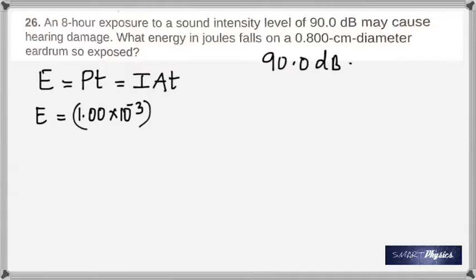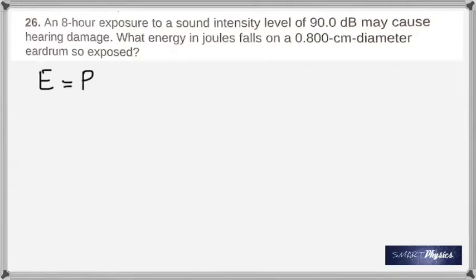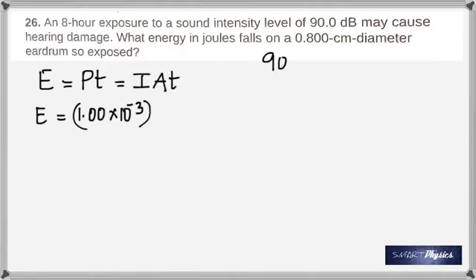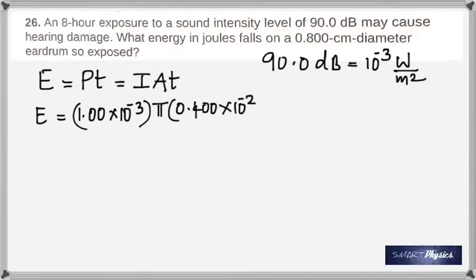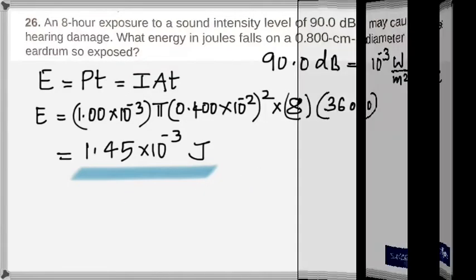And where did I get that from? We've seen that 90 decibels is 10 to the negative 3 watt per meter squared, just in the last problem. 90 decibels there was 10 to the negative 3, right? So that's what I've used here. I didn't want to do that again. So 90 decibels is 10 to the negative 3. And the area is that of a circle which is pi r squared, because the surface on which it falls on the eardrum is circular. So that's pi times radius squared times 8 times 3600, because it's 8 hours. You've got to change it into seconds. And you get 1.45 times 10 to the negative 3 joules.